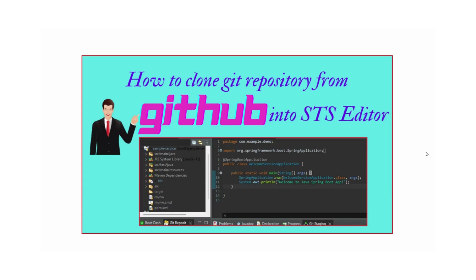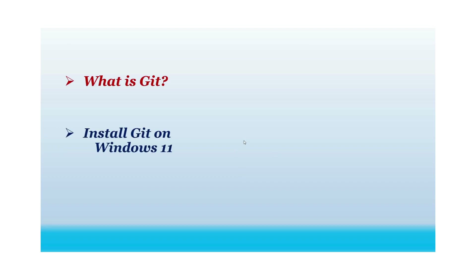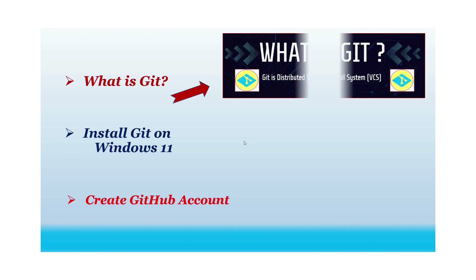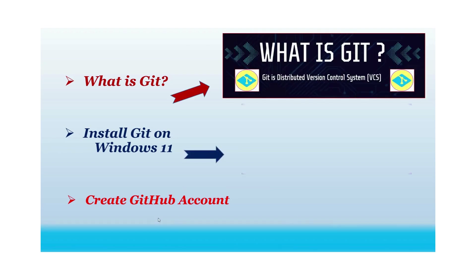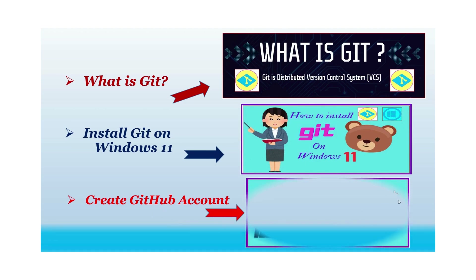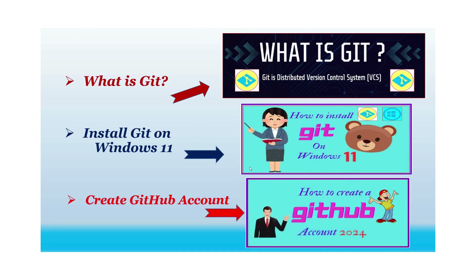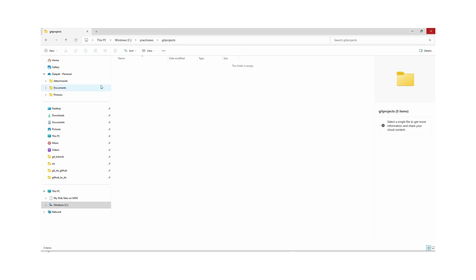Hey everyone, welcome back to our channel Code for Tech Solutions. Today in this video we are going to cover how to clone a Git repository from GitHub into the HDS editor. Before we go ahead, if you are new to Git, I have created some videos on Git — like what is Git and GitHub, how to install Git on Windows 11, and how to create a GitHub account. You can refer to these videos for a clear understanding of Git, so you can create a Git project and upload or clone from a GitHub repository.